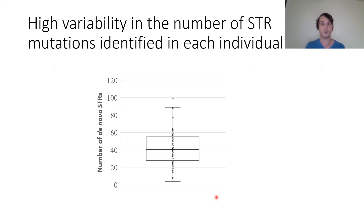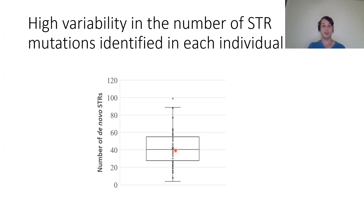Here's a box-and-whisker plot of de novo STR counts per individual (each dot is a second-generation CEPH individual). The mean is about 41 in the roughly 50% we could analyze, but there's high variability — similar to what Tom Sasani saw with SNVs. Most individuals cluster around the mean, but several hover around 20 de novo STRs, and one individual on the high end is close to 100 de novo STRs.